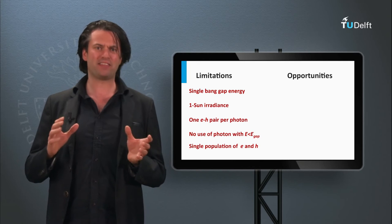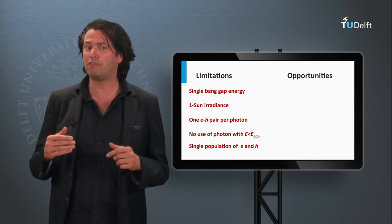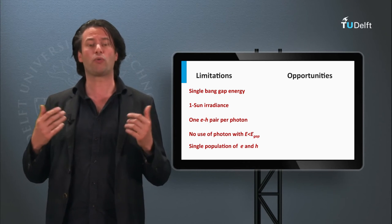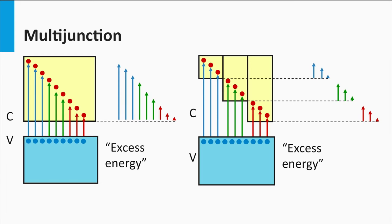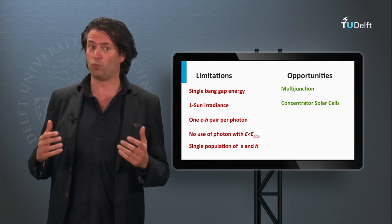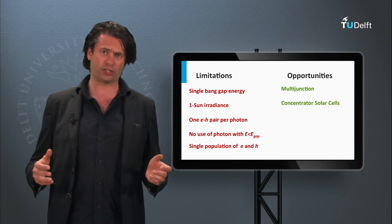Tackling these fundamental limitations means that we can develop PV concepts with efficiencies that can surpass the Shockley-Queisser limit. Tackling the first problem has been discussed last week. Both the III-V semiconductor PV technology and the thin-film silicon technology use the concept of multi-junctions — several solar cell junctions stacked upon each other with a response to different parts of the solar spectrum. The second problem, that concepts are based on one sun irradiance, is tackled using concentrator solar cells.